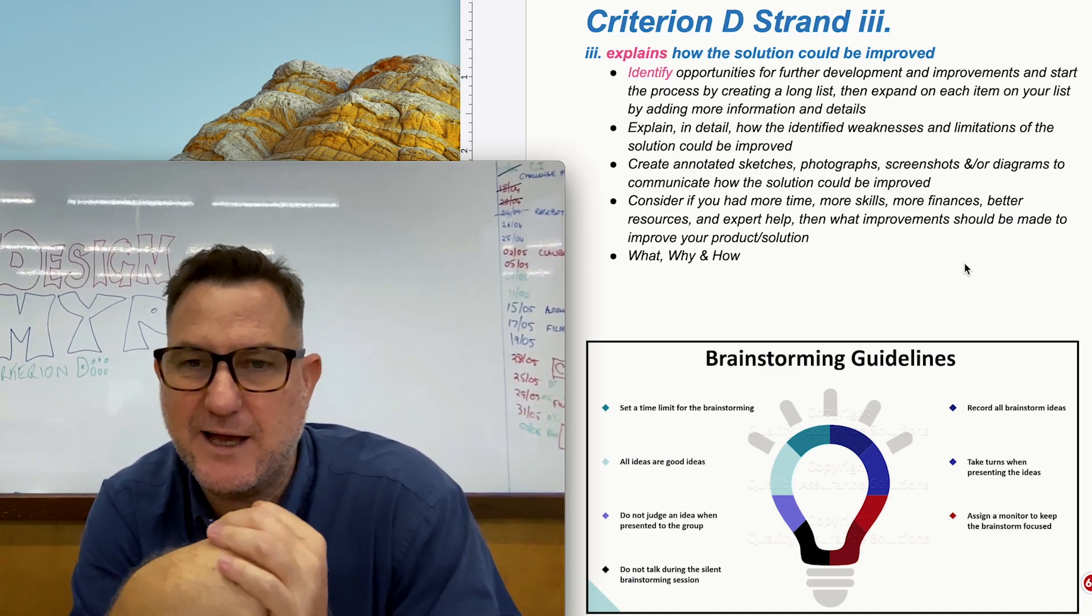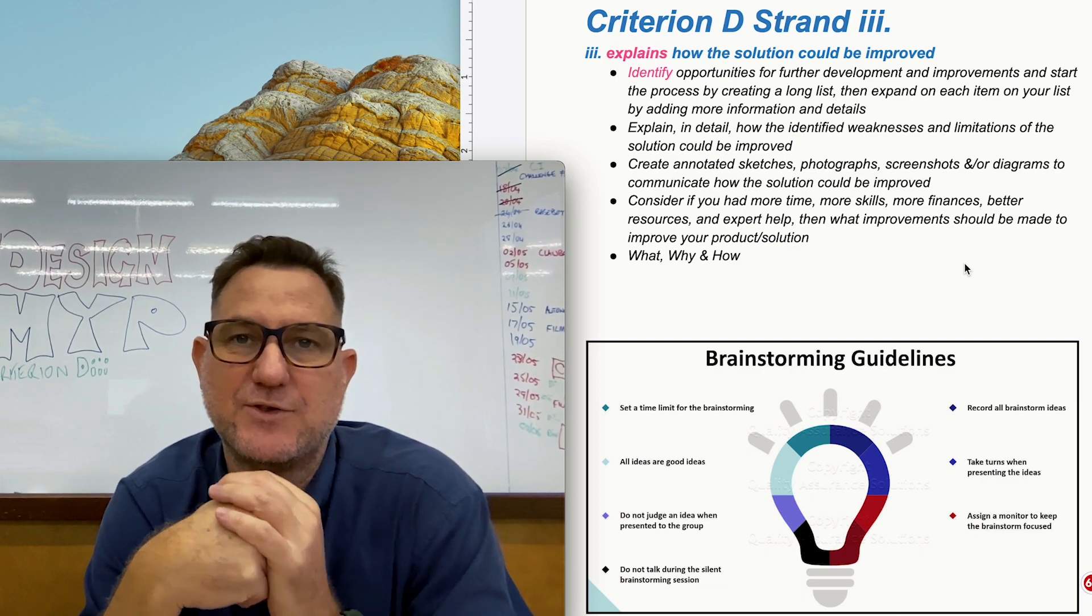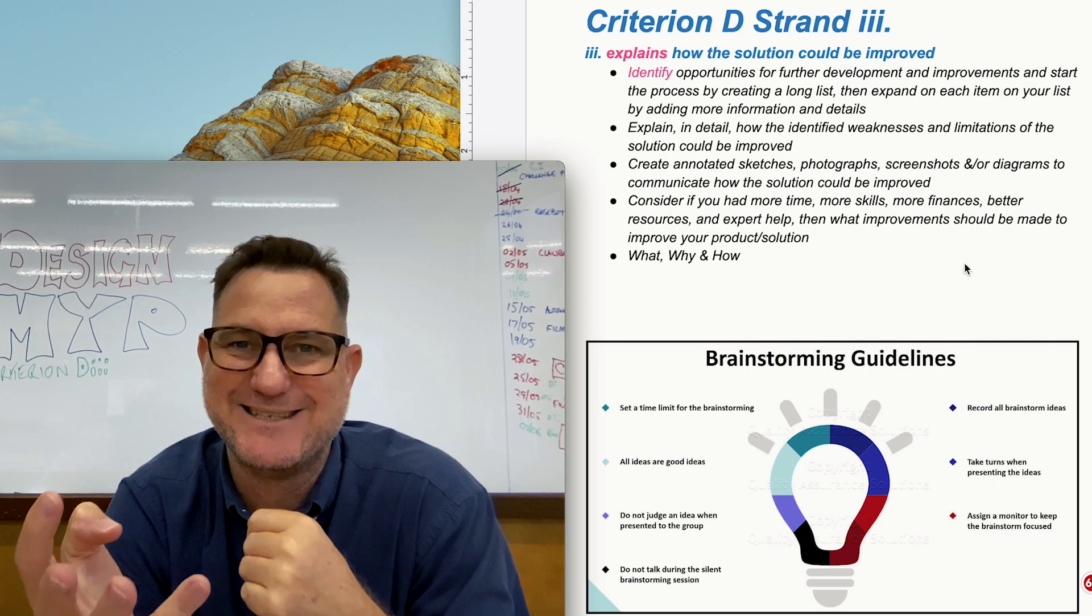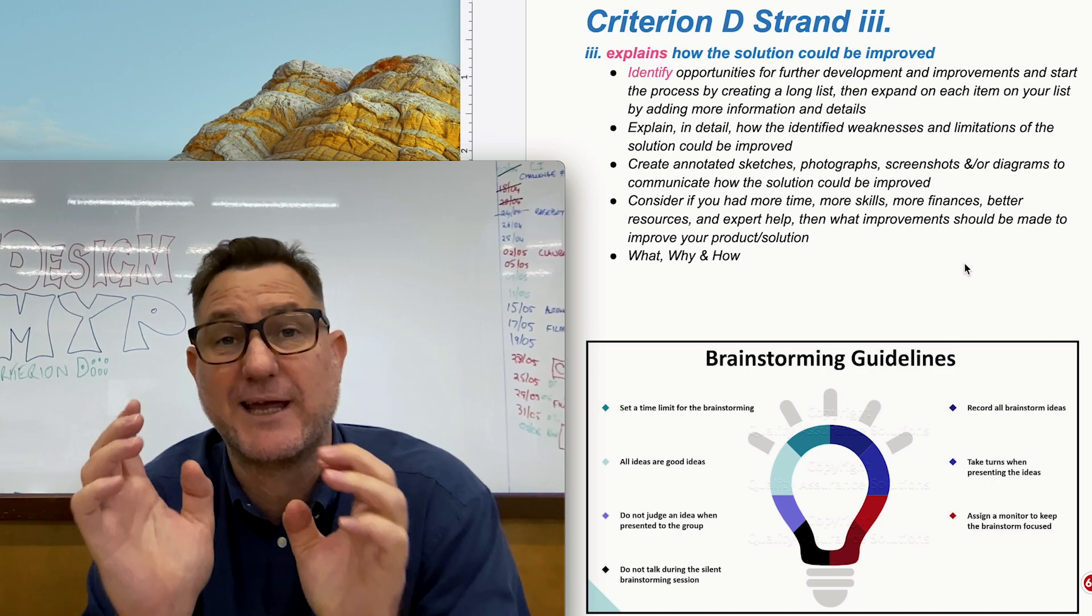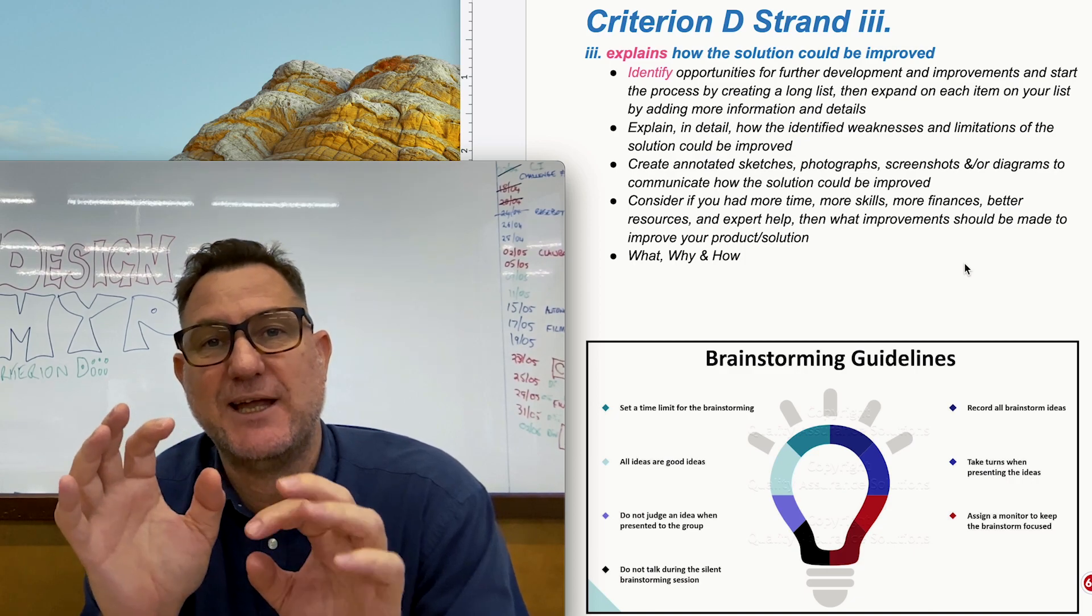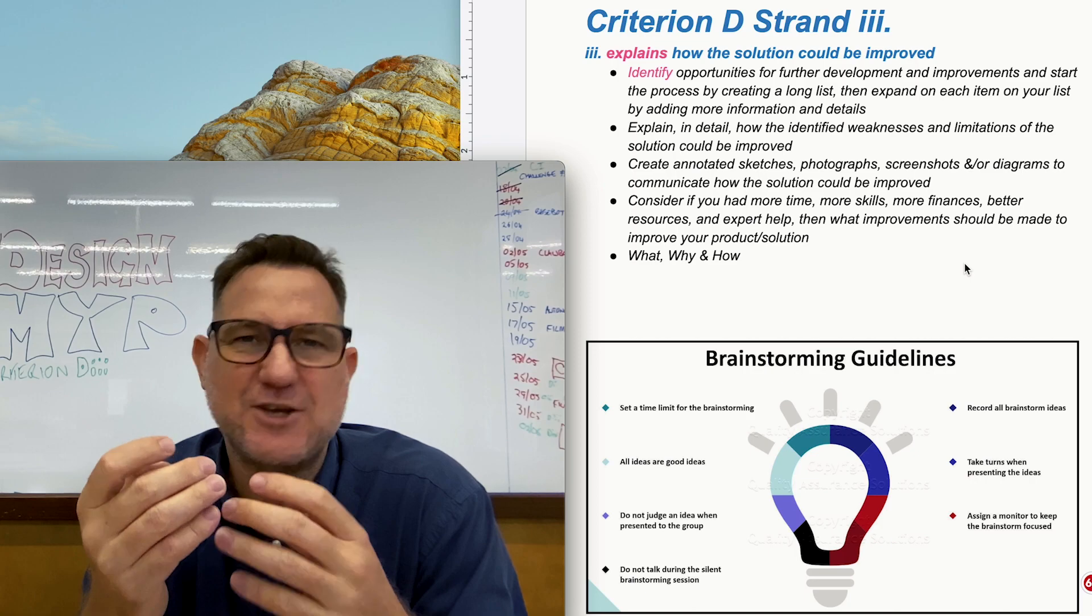The third bullet point here I'm encouraging people in my class to actually just use some images because sometimes it's much easier to explain something with an image. For example like colors, if you said if I was to do this again I would change the blue to a darker blue,